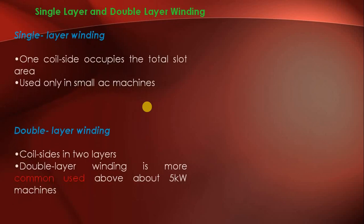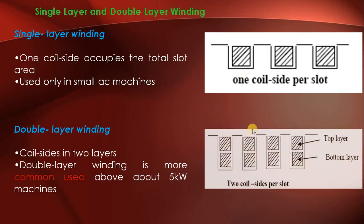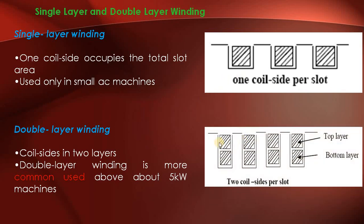Here is the single layer winding, where one coil side occupies the total slot area. Single layer winding is used for small AC machines. And this is the double layer winding, where the coil side is arranged in two layers. Double layer winding is more common.